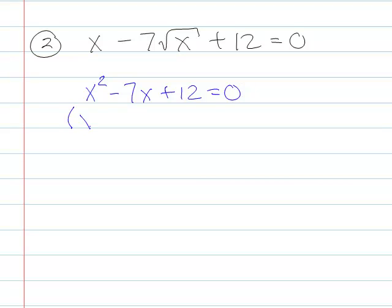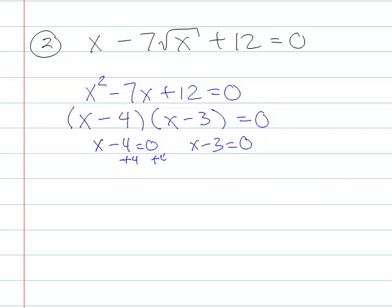Alright, so hopefully we'll say, alright, that's gonna be x minus, 3 and 4. Yep, that works, so x minus 4 is 0, x minus 3 is 0, add 4 to both sides, so x is 4, add 3 to both sides, so x is 3. So we've got x is equal to 3 and 4.